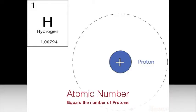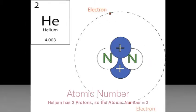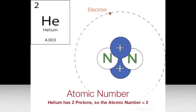The atomic number equals the number of protons in the nucleus. Hydrogen has one proton and an atomic number of one. Helium has two protons and therefore has an atomic number of two.